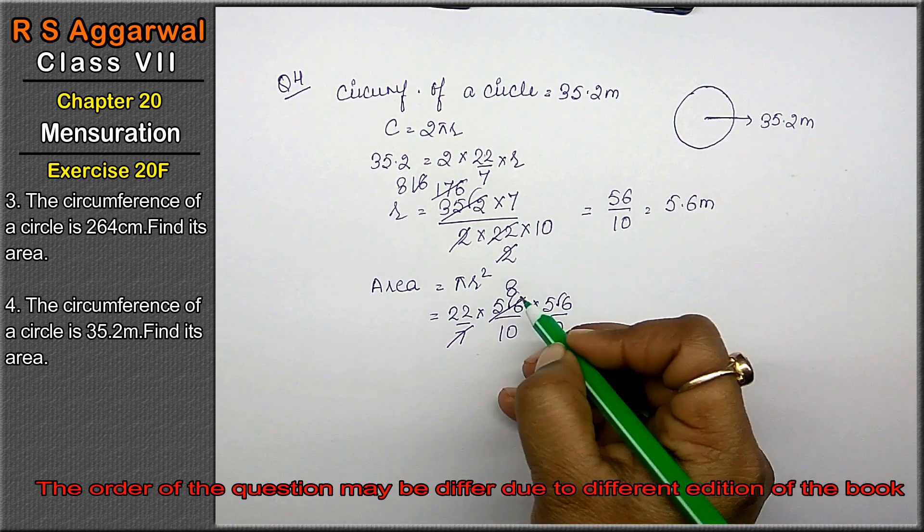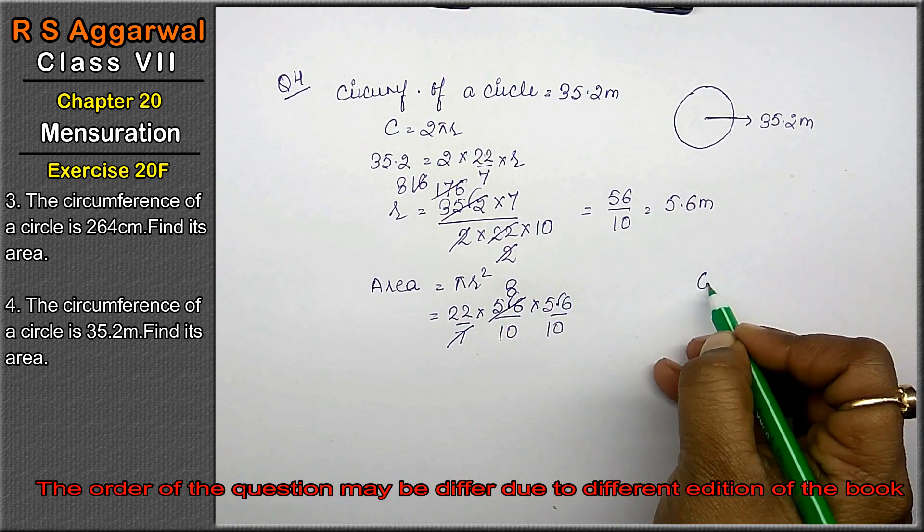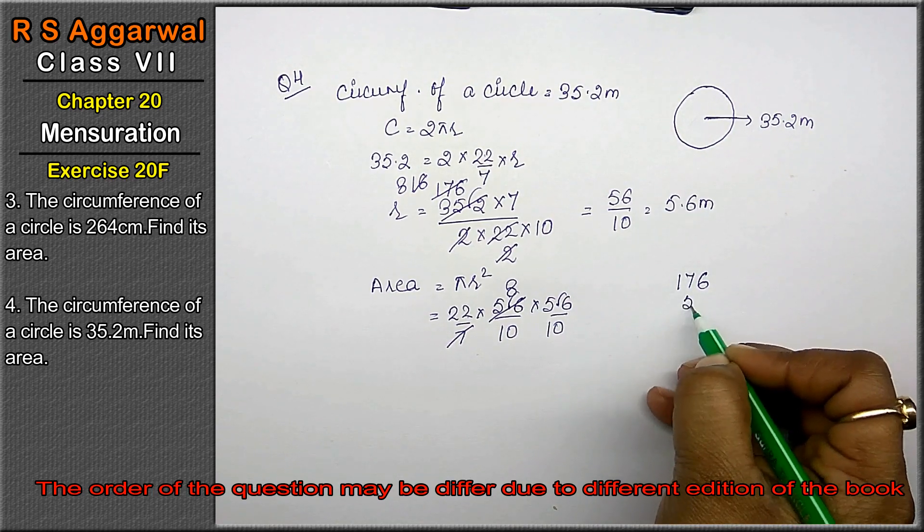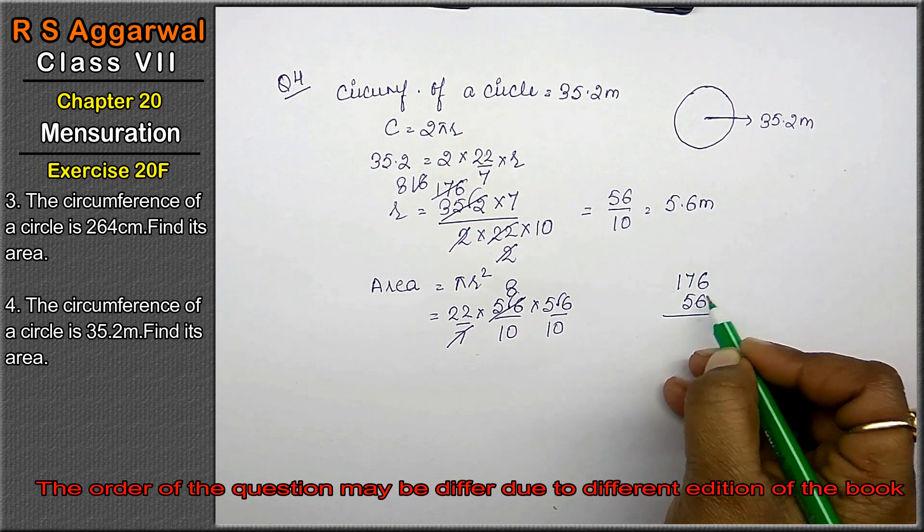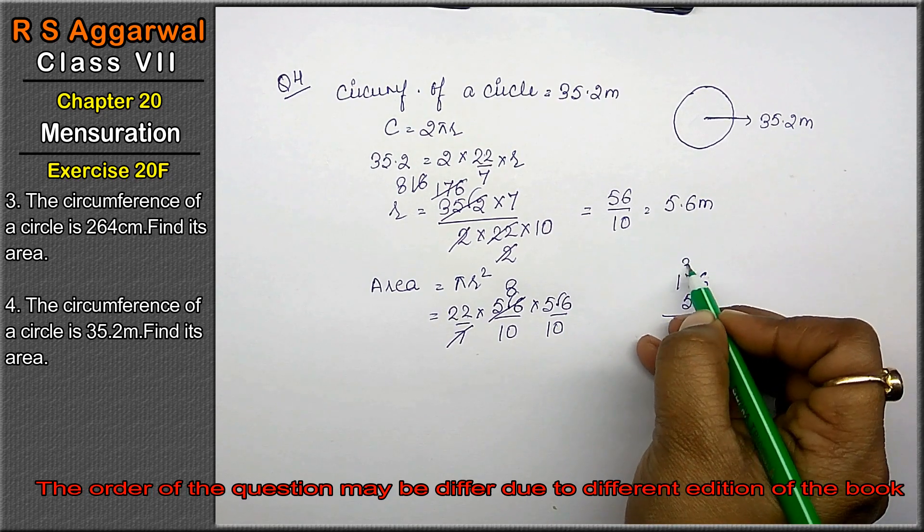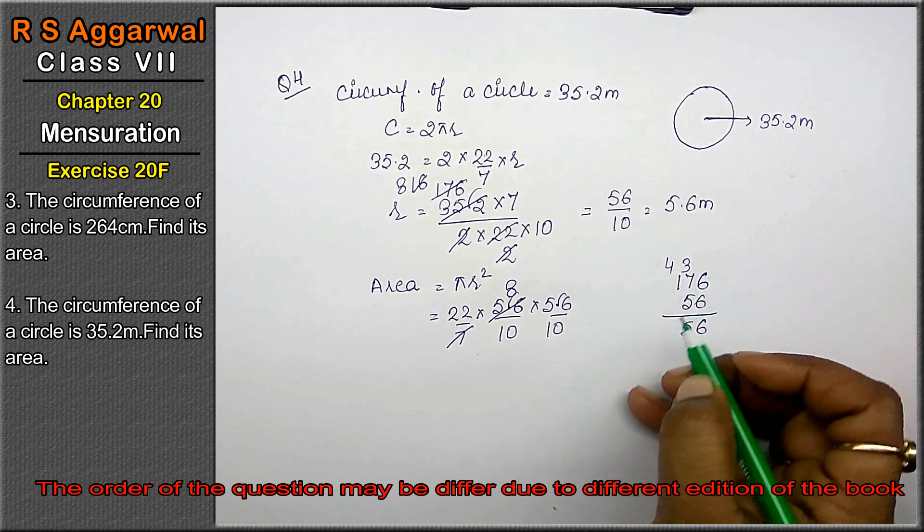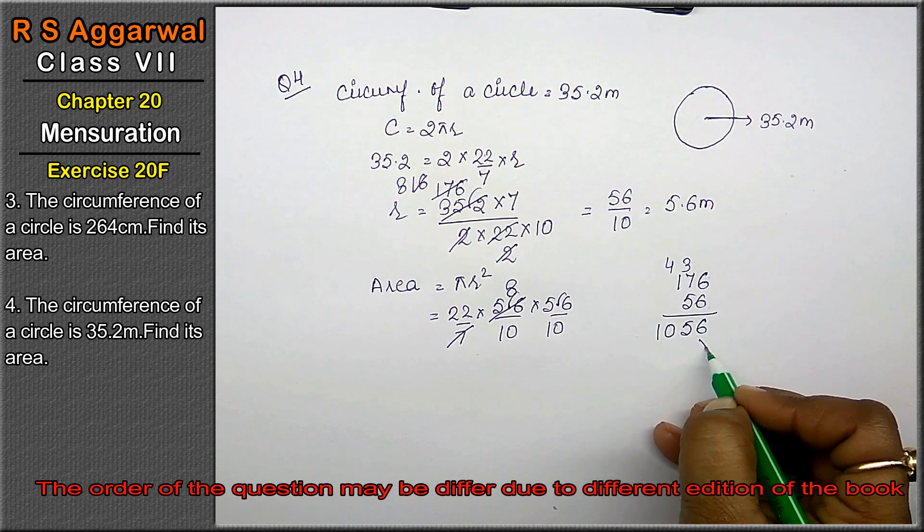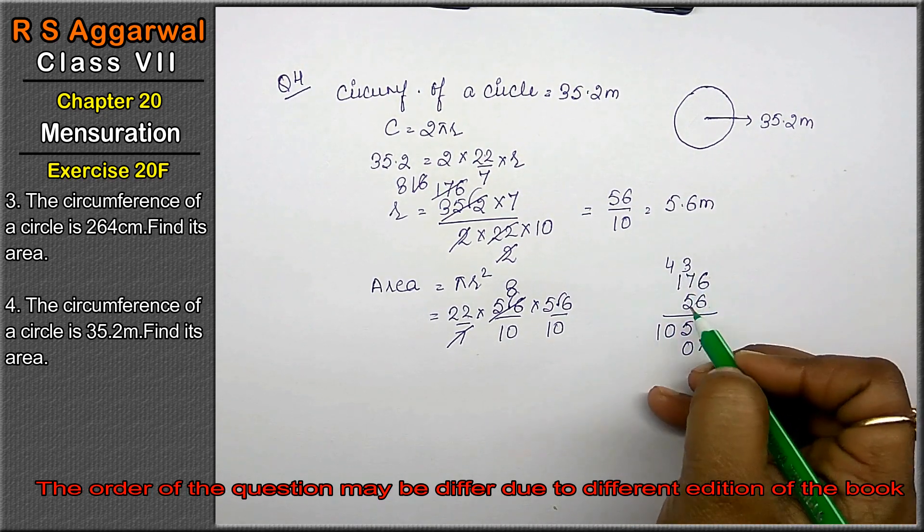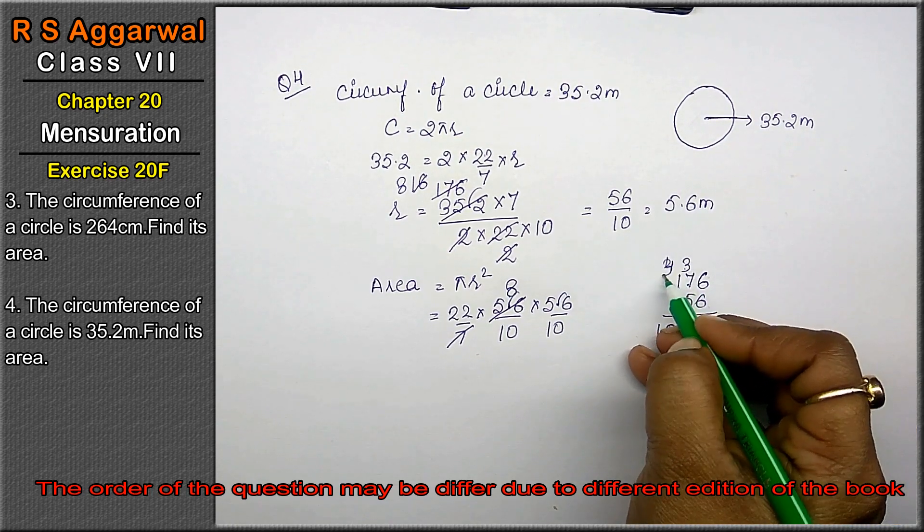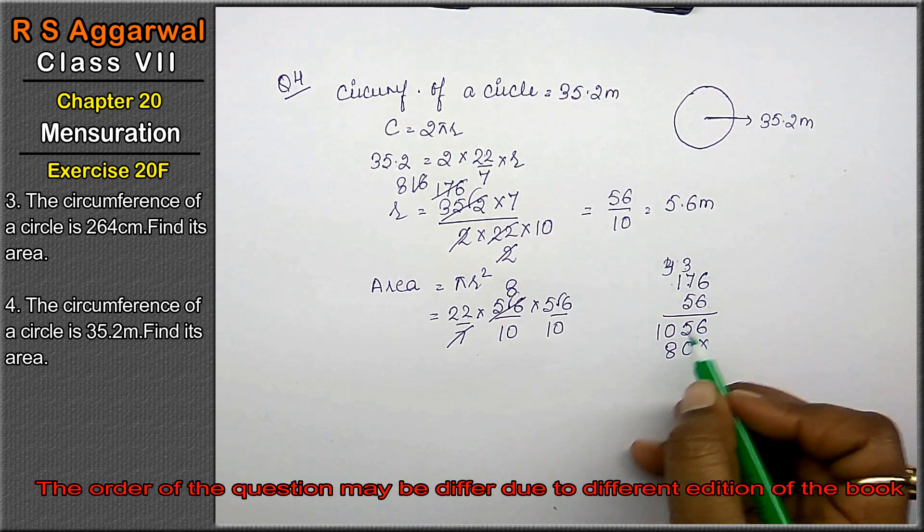7 eights are 56. 8 twos are 16. 6 carry 1. 8 twos are 16 and 17. Aar 56's ko multiply kya. 6 sixes are 36. 6 sevens are 42. 45. 6 ones are 6 and 10. Multiply hai. 5 sixes are 30. 3 carry. 5 sevens are 35. 38. 3 carry. 5 ones are 5.